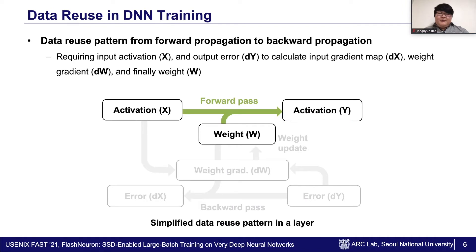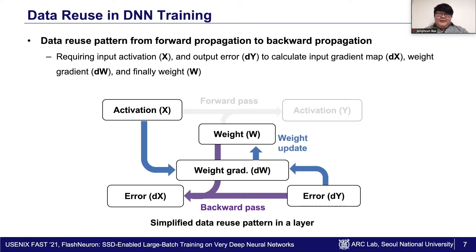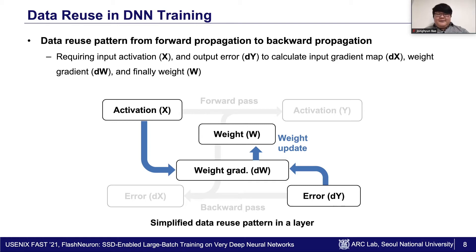Let's look at the data reuse pattern of DNN training in greater detail. During the forward pass, a DNN layer performs matrix multiply of input activations x and weight w to compute the output activations y. In the backward pass, the error between the prediction and the ground truth, like dy in the figure, is propagated back through the DNN, and then the weights w are updated to minimize the error. In this process, the input activations x are reused to calculate the weight gradient dw. This implies that, unlike inference, all the activations computed in the forward pass must be kept in GPU memory until the backward pass is completed.